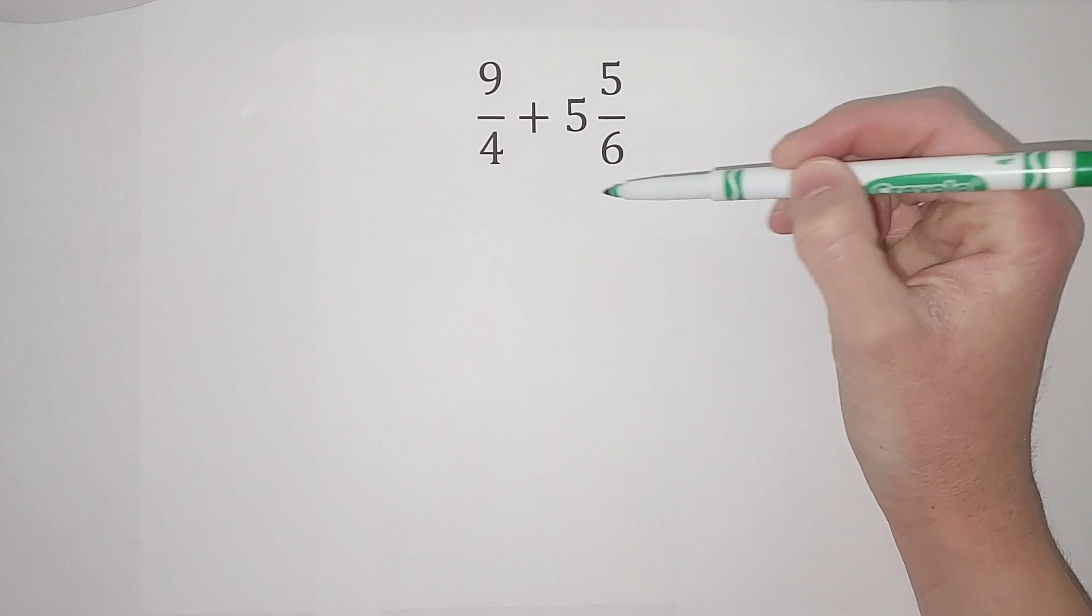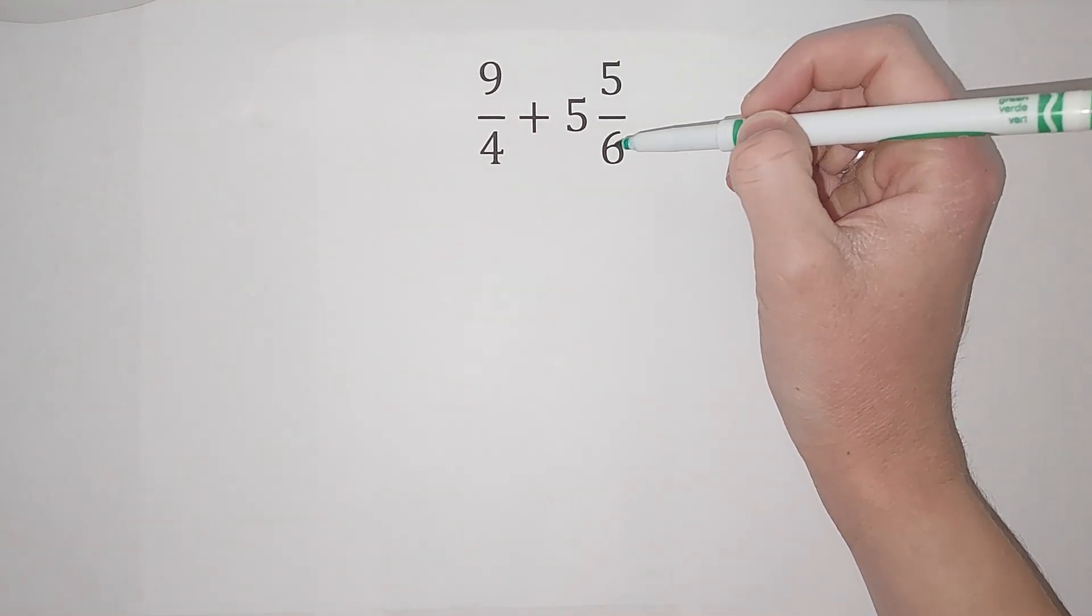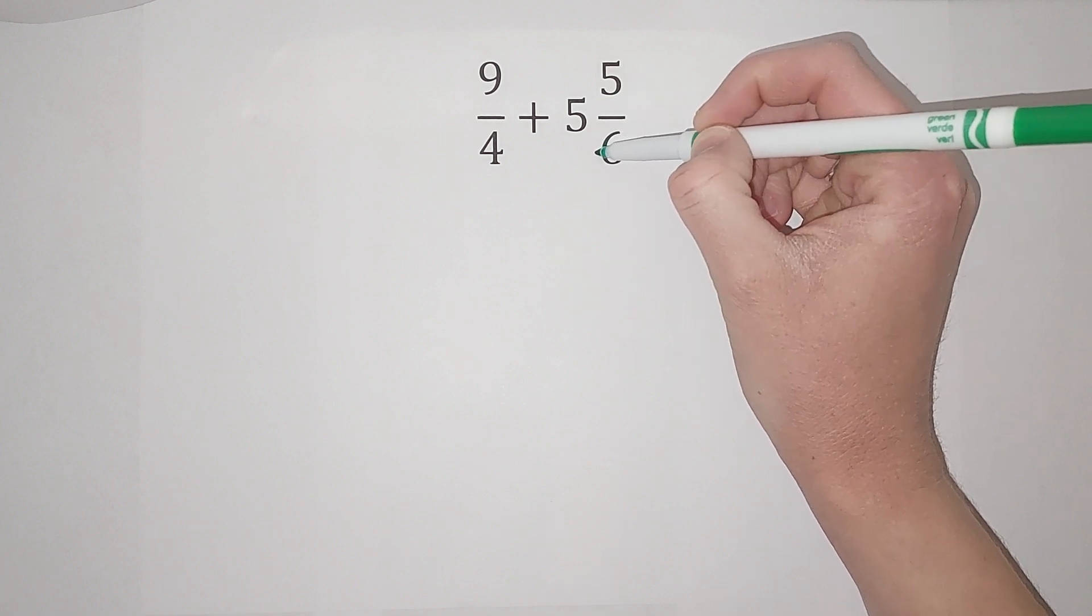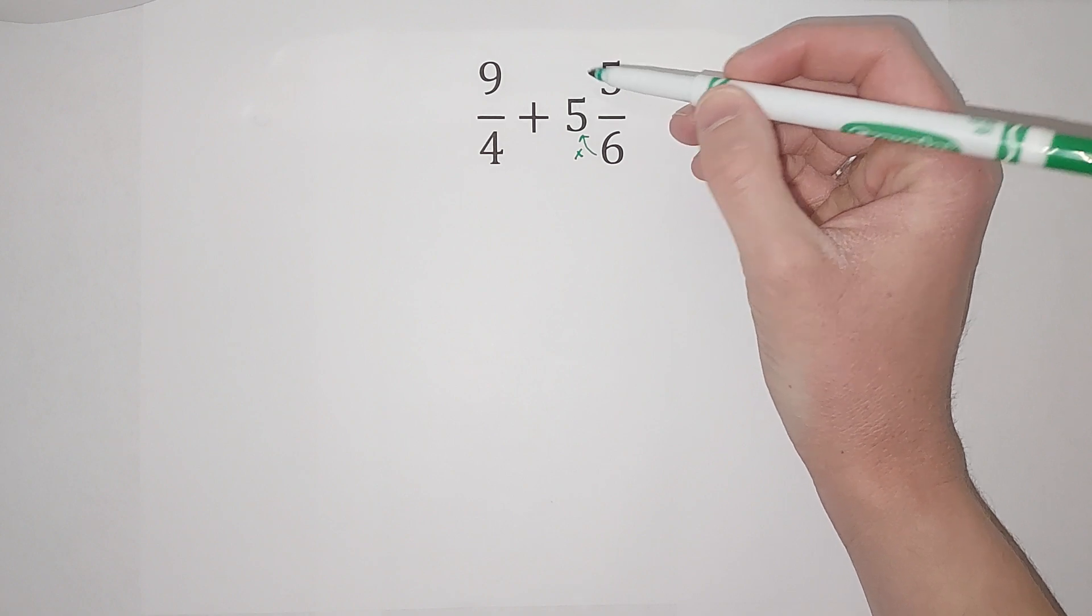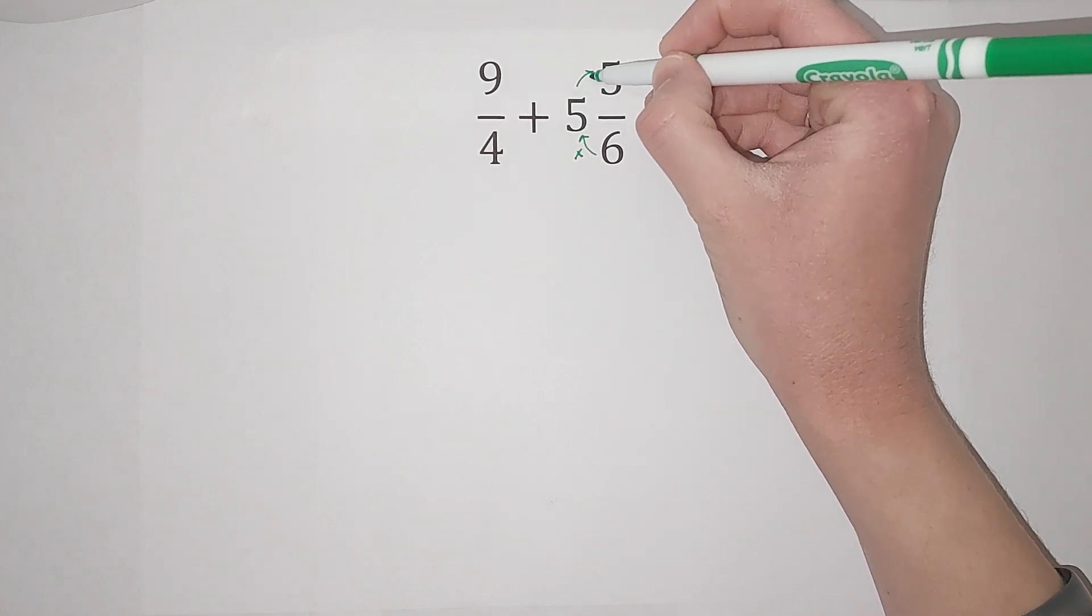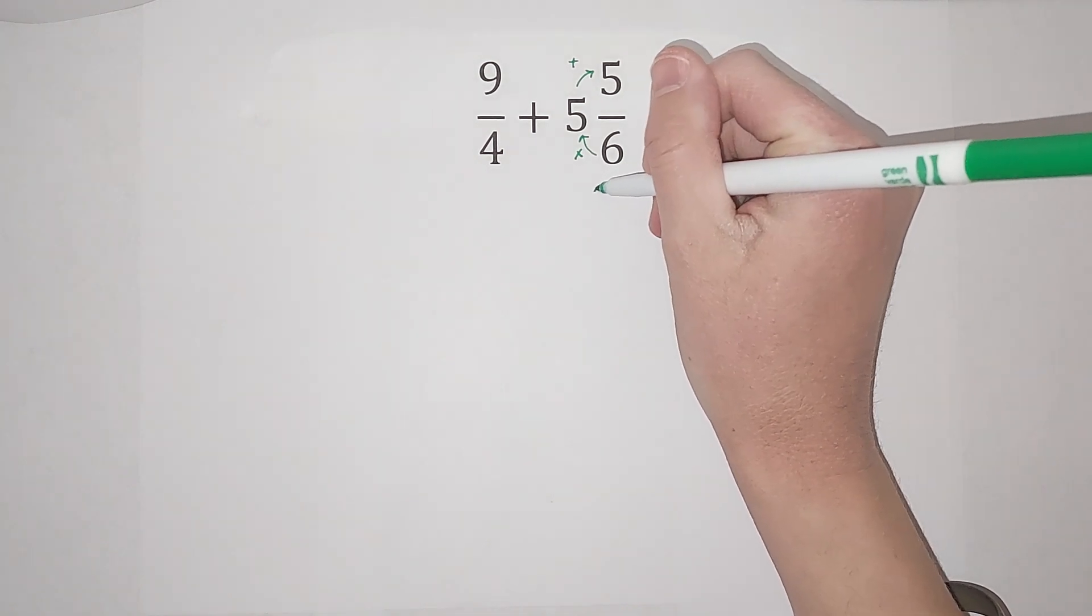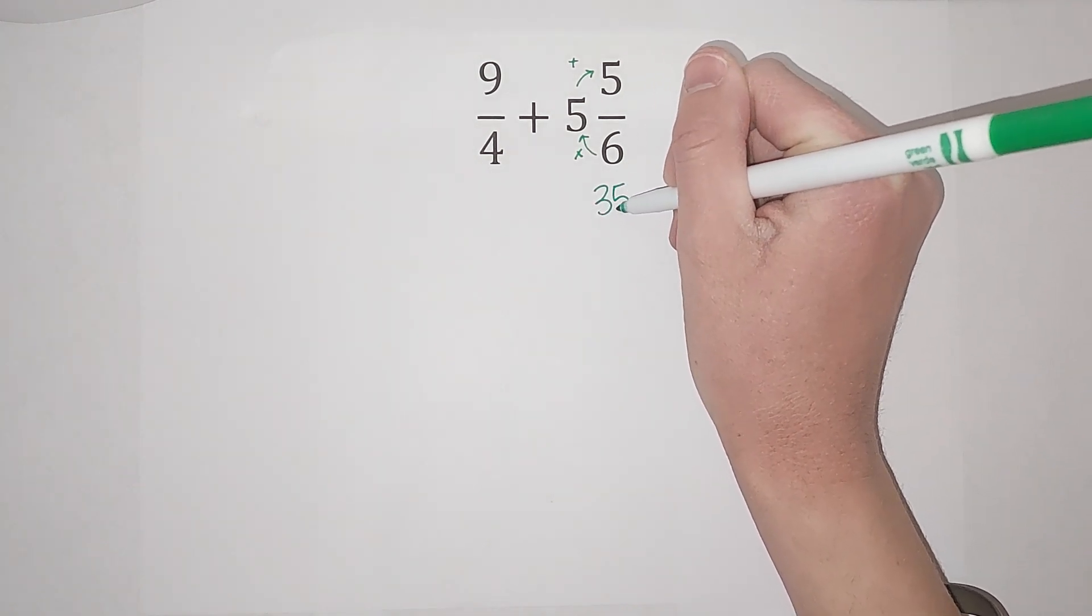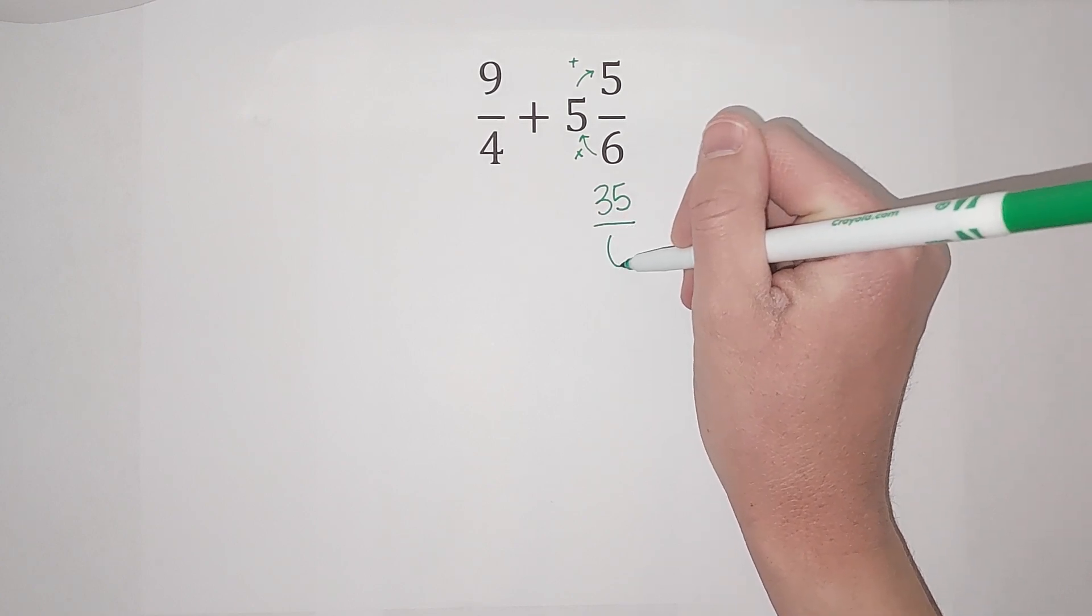So to change this into an improper fraction, I will link some more examples in the corner if you need them, but all I do is I take my denominator and I multiply it by the big number. So 6 times 5 gives me 30 and then I add the numerator, so 35. So we're going to have 35 as my new numerator of my improper fraction and the bottom is still 6.